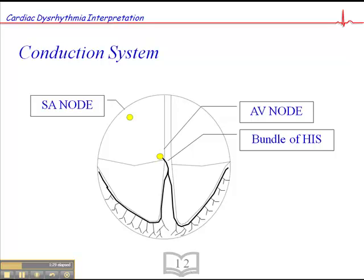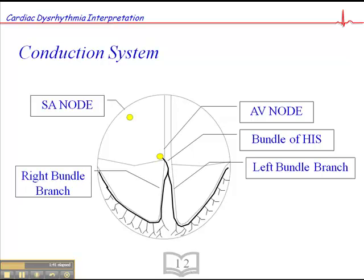If you think of the AV node as like a toll booth where the impulse slows, and then it hits this rapid highway and travels very rapidly down the bundle of His and into the right bundle branch and the left bundle branch, and finally into the Purkinje fibers where it allows the ventricles to depolarize and contract.